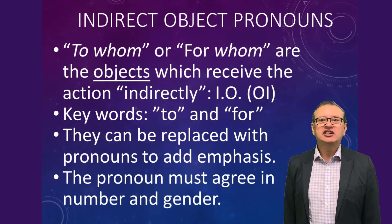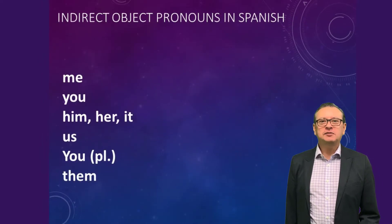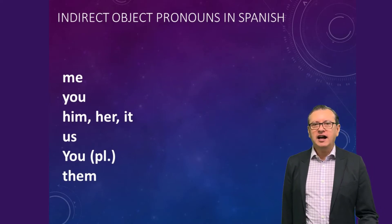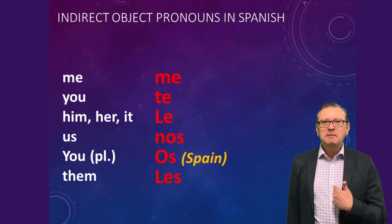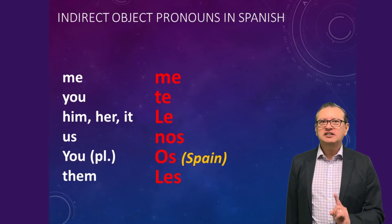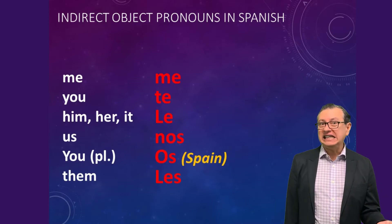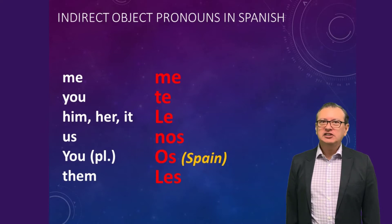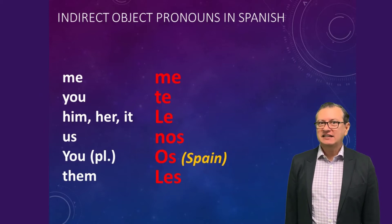The pronoun must agree with gender and number. In English we use: me, you, him, her, us, you, or them. In Spanish it's a little bit different — take a look: me, te, le. Very interesting because we only use 'le' for him, her, or if you refer to it when it's an object. Then nos, os (only used in Spain, but very popular in the Iberian Peninsula), and les for all the plurals.